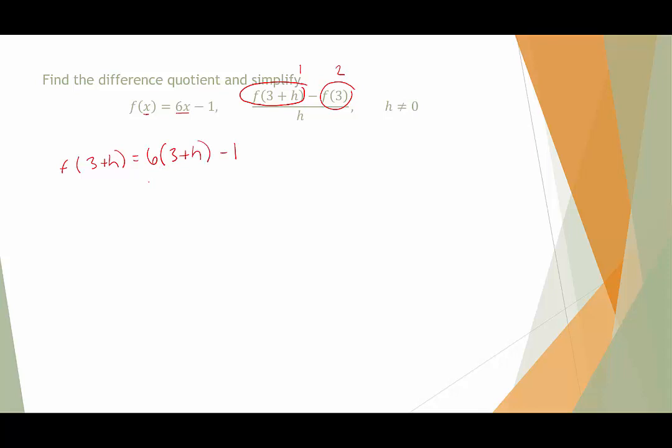Now I'm going to distribute the 6. This would give me 18 plus 6h minus 1. 18 minus 1 is 17, so I'm just going to put the 6h first. It doesn't matter which one you put first. Generically we put the variable first. So we have 6h plus 17 when we're simplified. So step 1 is done.